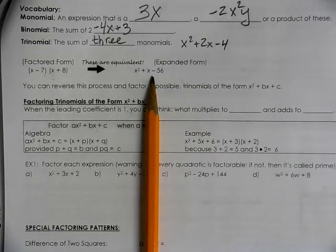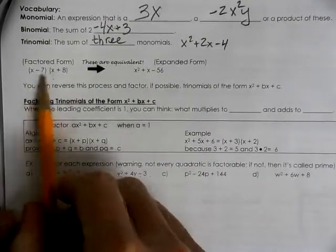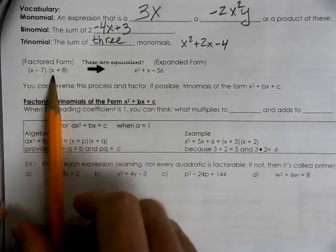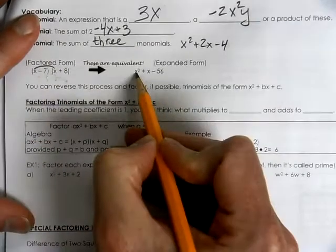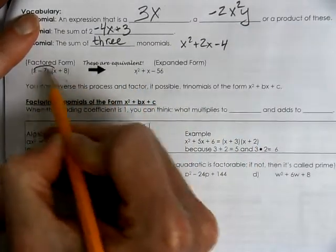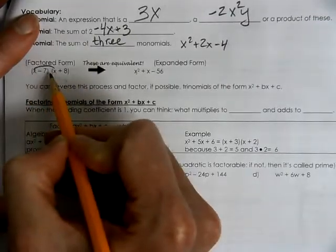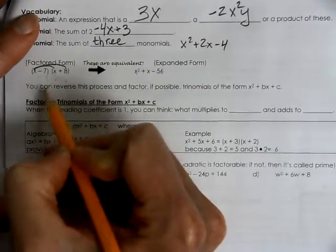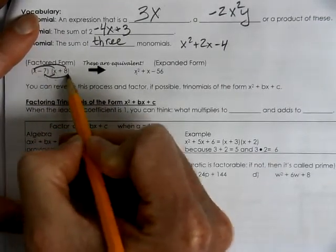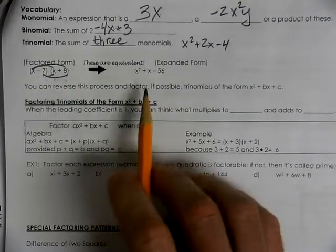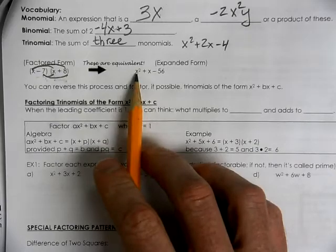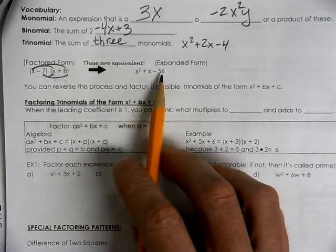Because when you take your two binomials that you're multiplying together, you multiply the first, then the outer, the inner, and the last to work through FOIL. And you produce this expanded form, x squared plus x minus 56.